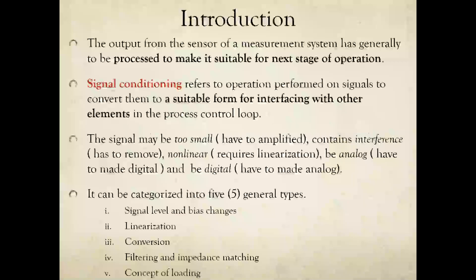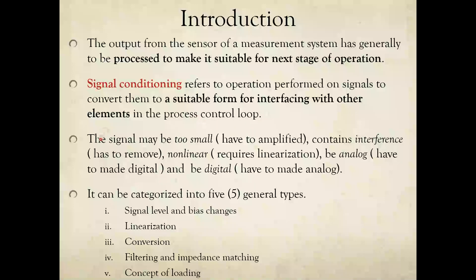For introduction: the output from the sensor of a measurement system generally has to be processed to make it suitable for the next stage of operation. The output from the sensor is raw data that needs to be processed before it can proceed. Signal conditioning refers to operations performed on signals to convert them to a form suitable for interfacing with other elements in the process control loop — referring back to the general block diagram from chapter one.